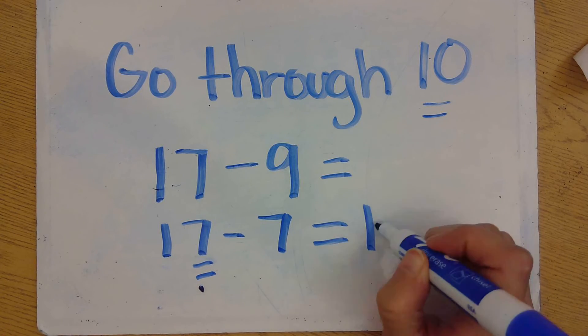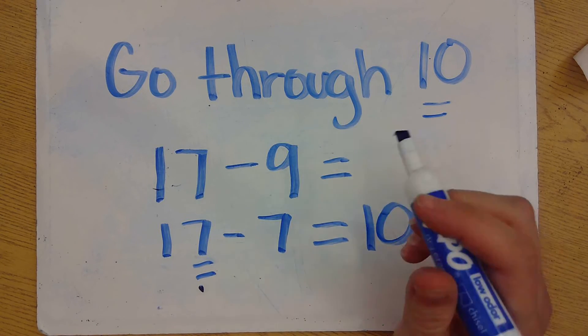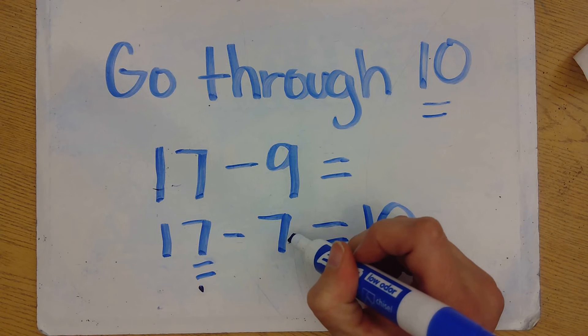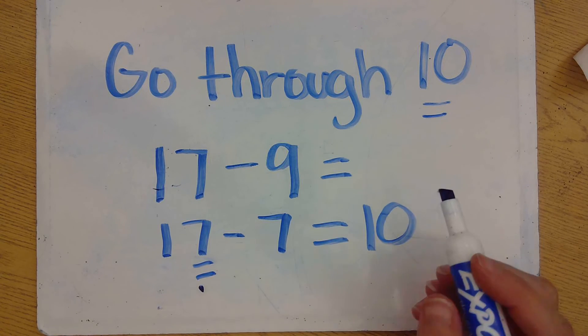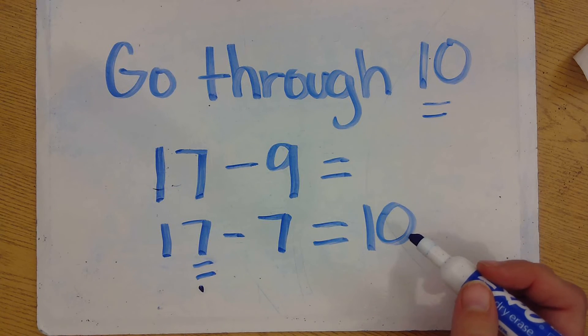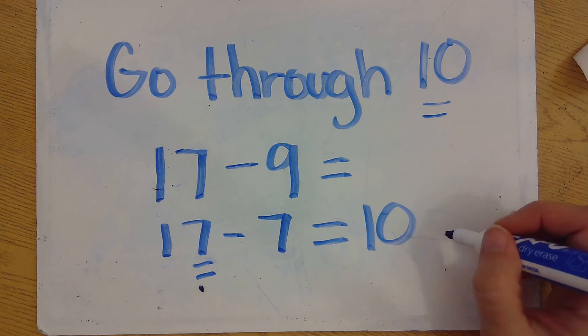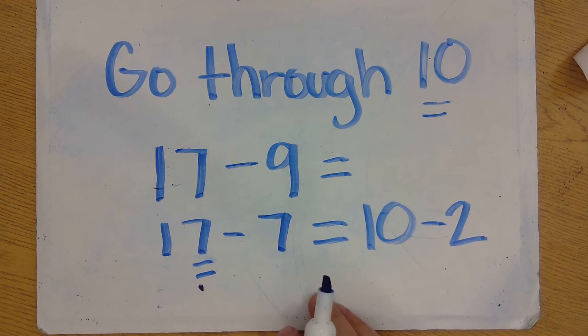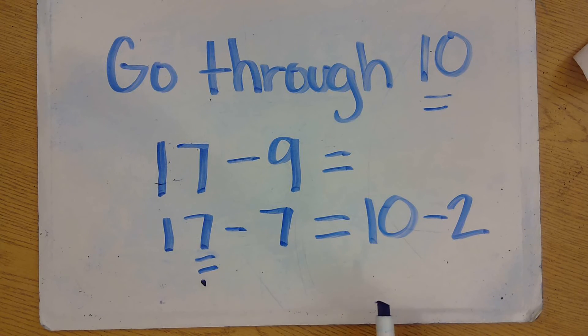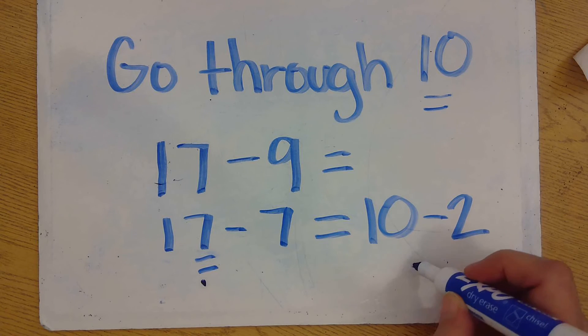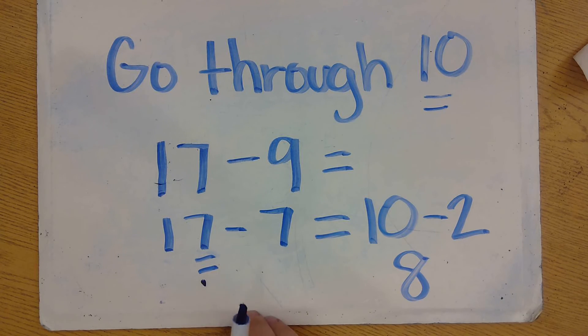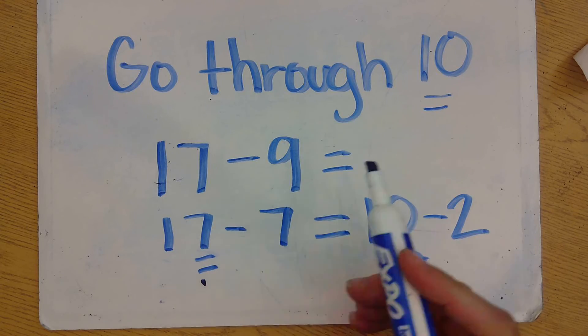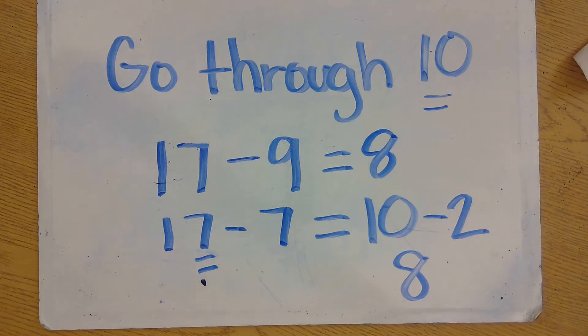That will get me to 10, and I know 7 is 2 numbers away from 9. So really, all I have left to do is subtract 2 more, and then I will get my answer. So what is 10 minus 2? Well, that's easy. I know really fast that that equals 8. So 17 minus 9 equals 8.